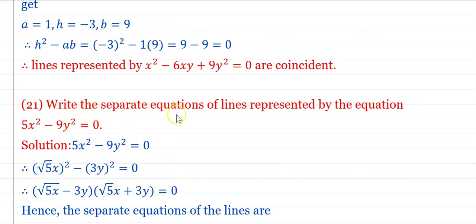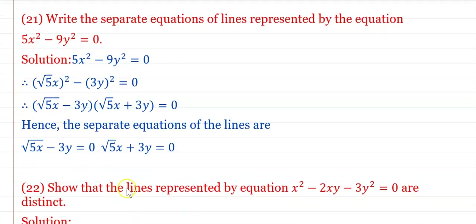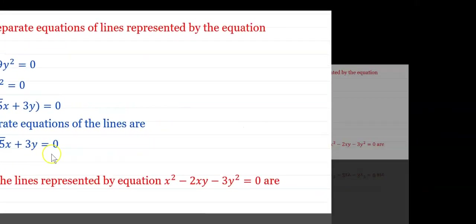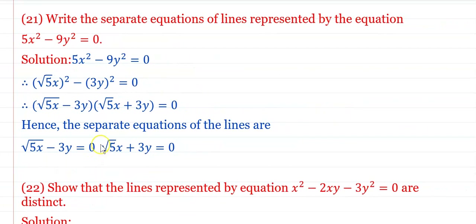Write the separate equations of the lines represented by 5x² − 9y² = 0. Using the difference of squares formula: (√5·x)² − (3y)² = 0. Factoring: (√5·x − 3y)(√5·x + 3y) = 0. Hence the separate equations are √5·x − 3y = 0 and √5·x + 3y = 0.